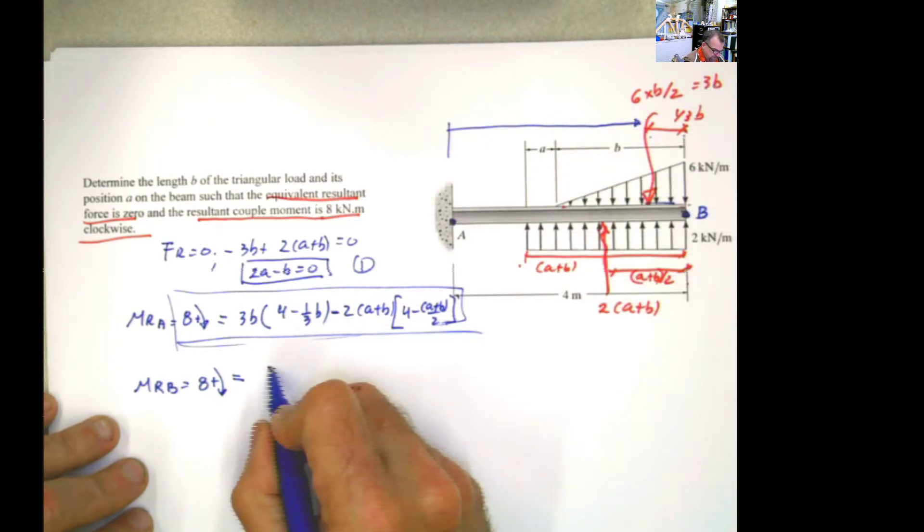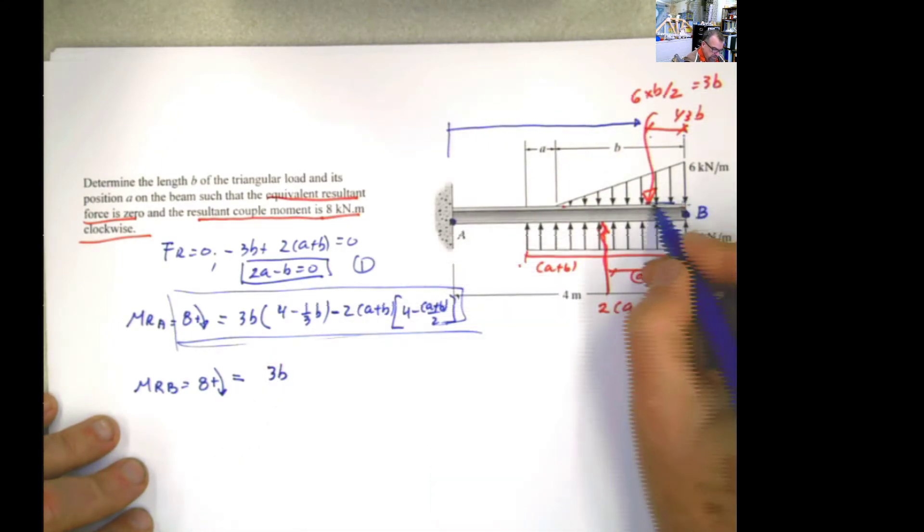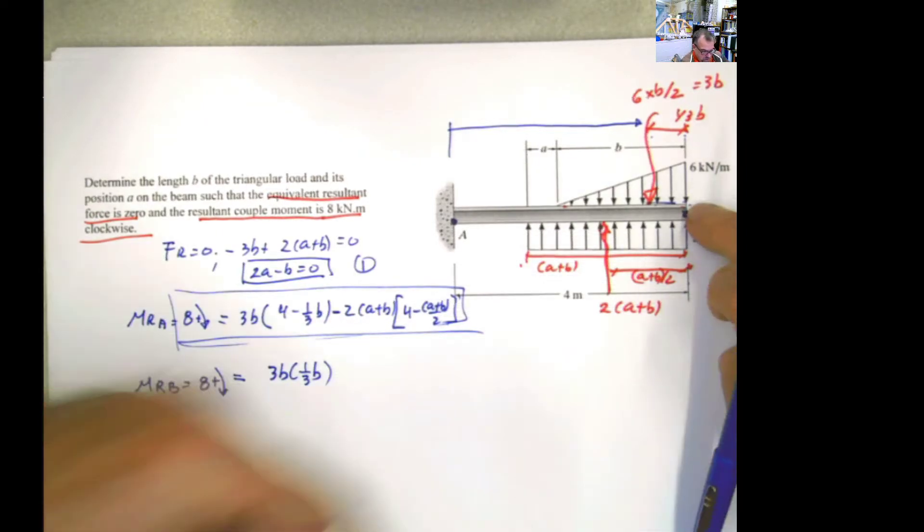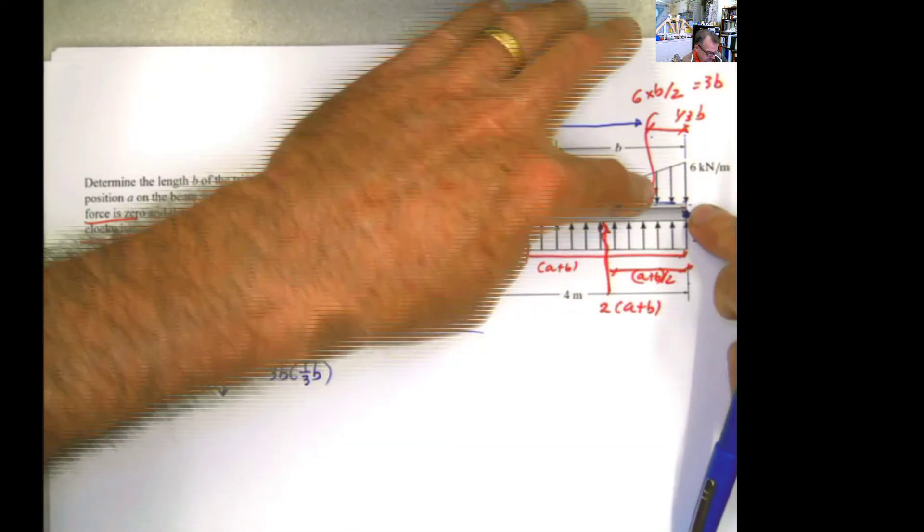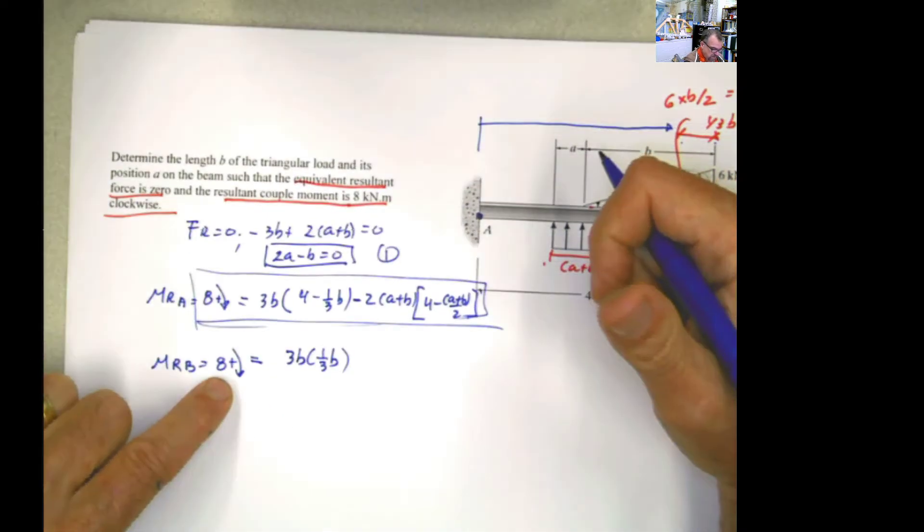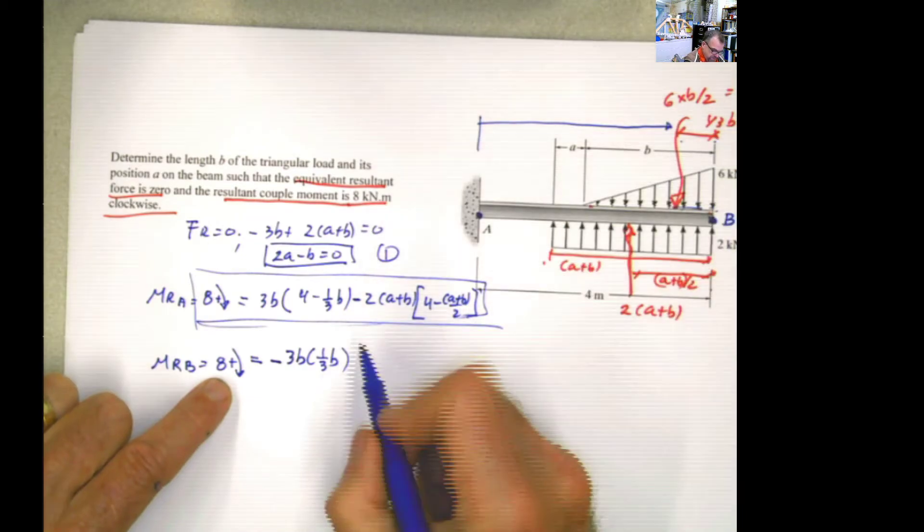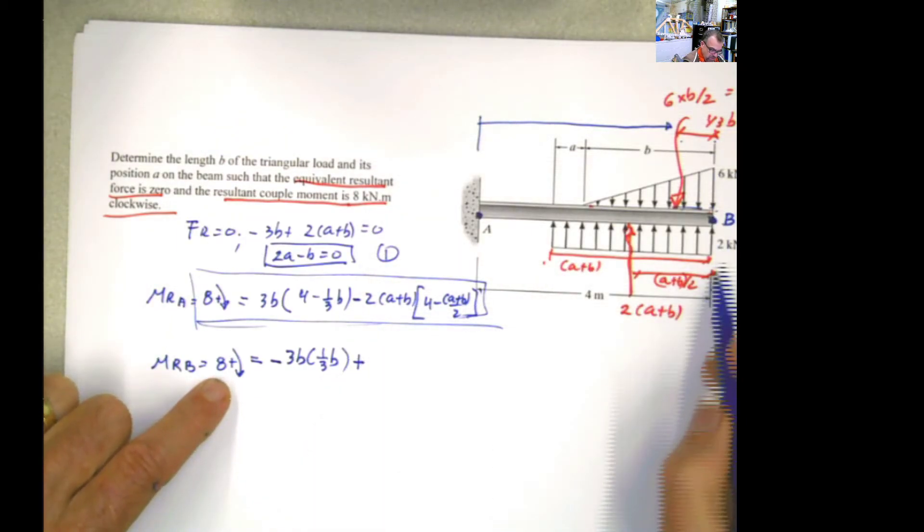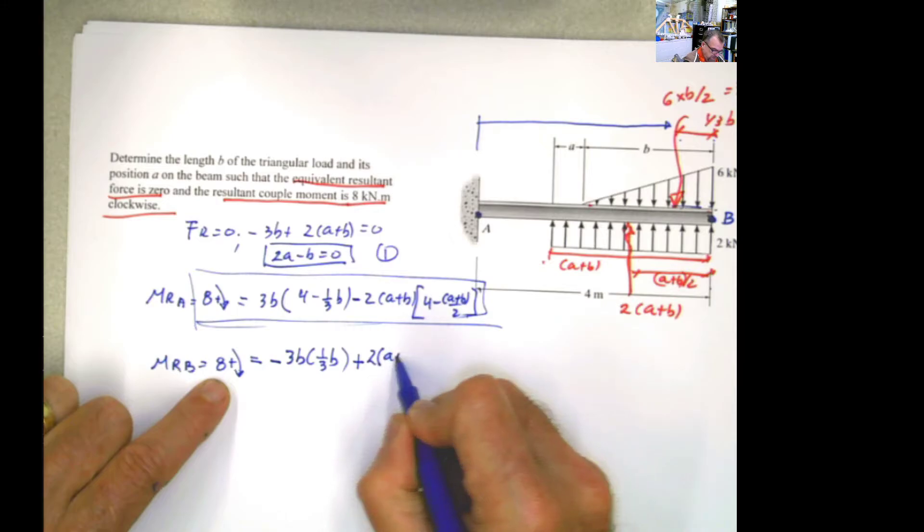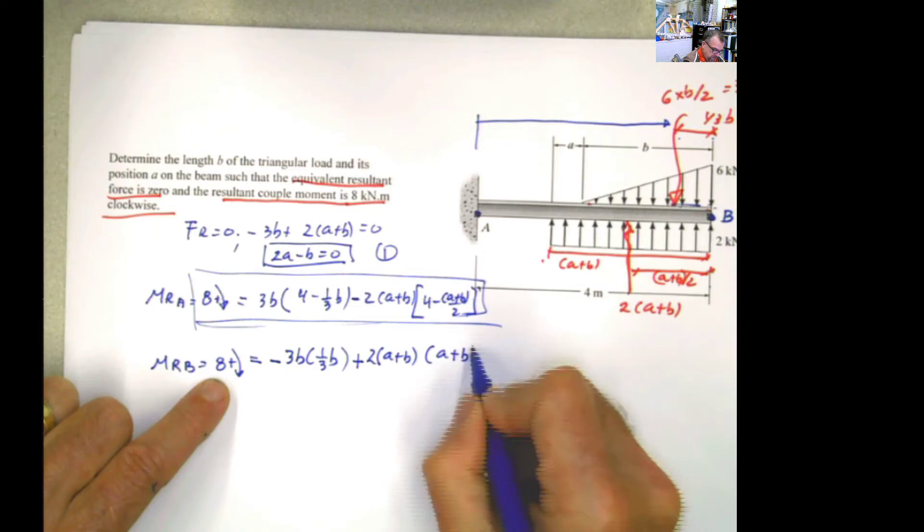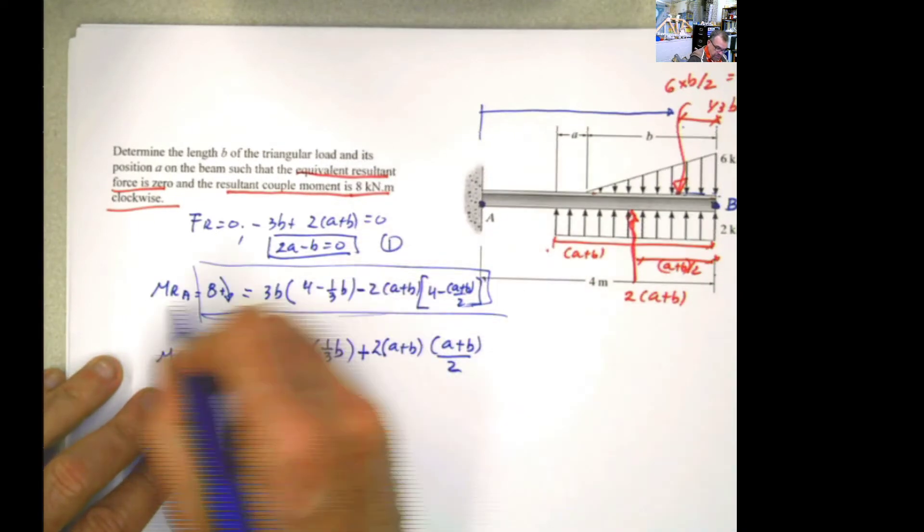The value of the force is 3b multiplied by 1 third of b. Now, keep in mind this. If I do moment with respect to this point, this is coming in this way, like that, counterclockwise. And I say clockwise is positive, so that has to be negative. And this one is going to be positive. The value of the force is 2(a plus b). And the distance is going to be (a plus b) divided by 2. Now, I can solve this.